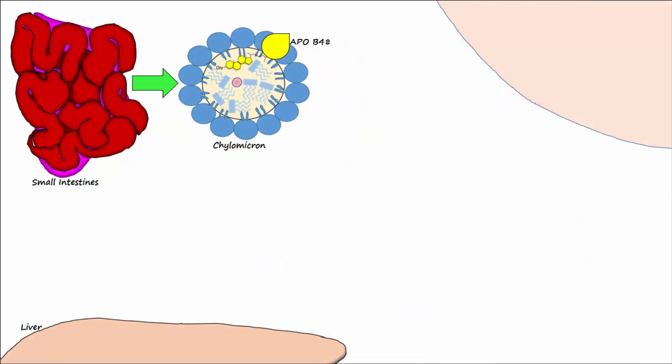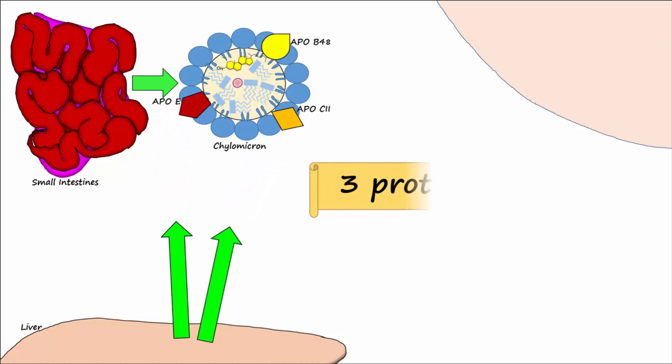Once in the blood, the chylomicron binds to two additional liver proteins called ApoE and ApoC2. The chylomicron now has a total of three apoproteins bound to it.